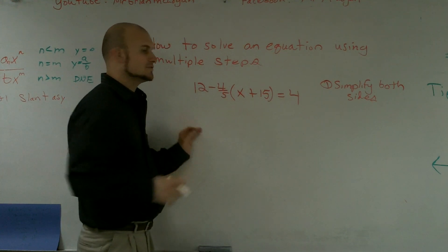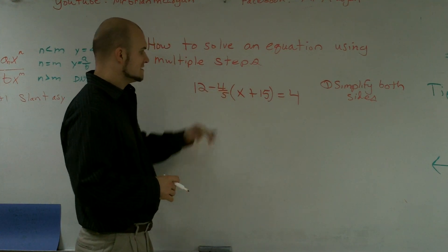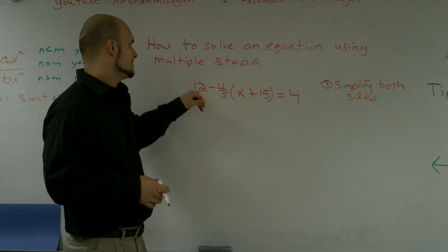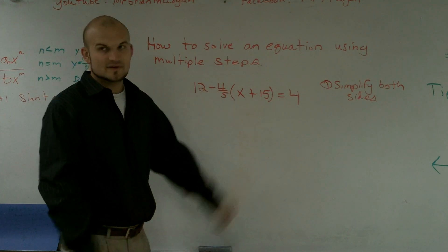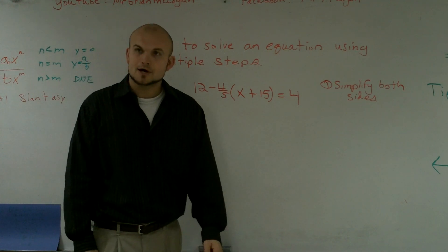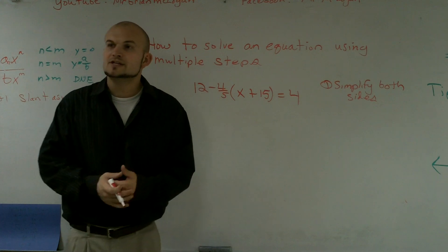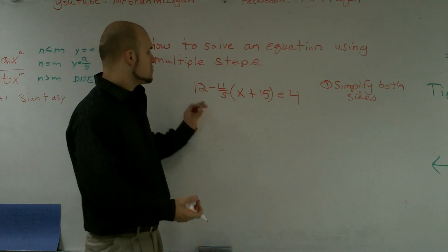Over here however, I got a lot of stuff going on. I have a fraction, 4/5, I have times a parenthesis x plus 15, and I got 12 minus that. First thing I do is I know when I'm simplifying, I need to use my order of operations.